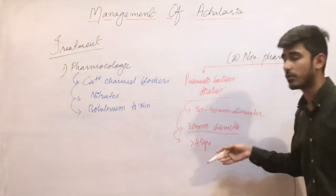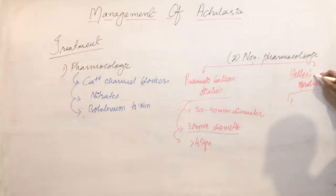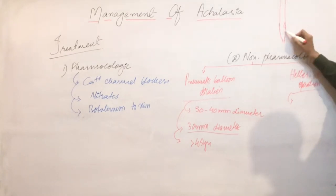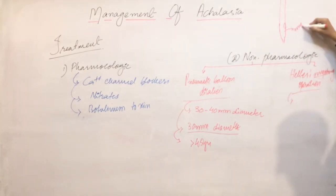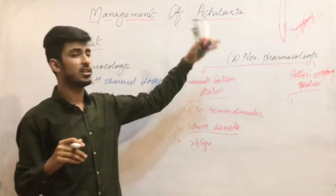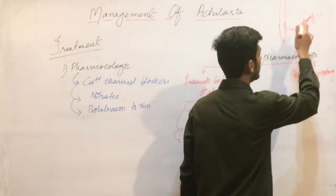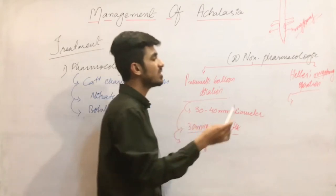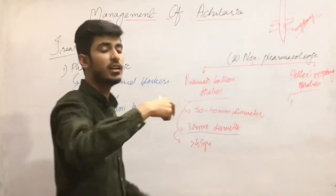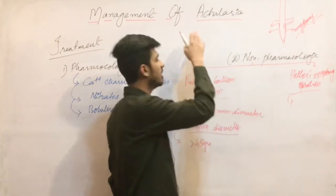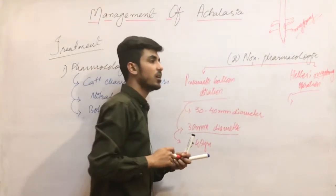The second non-pharmacological option is Heller's operation, also called Heller myotomy. As the name indicates, myotomy means removal of the muscle. You remove the muscles from the lower esophagus and cardiac region — the sphincter area. Removing the muscle helps cause dilation of the sphincter. These are the two non-pharmacological treatment options for Achalasia.